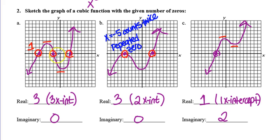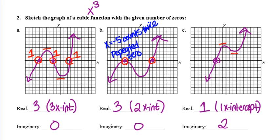Coming down here. Cross, counts once. Cross, counts once. Cross, counts once. 1, 2, 3. It's x to the third. Can't be any more than that. Bounce, counts twice. Cross, counts once. 2 plus 1 is 3. So, no imaginary.